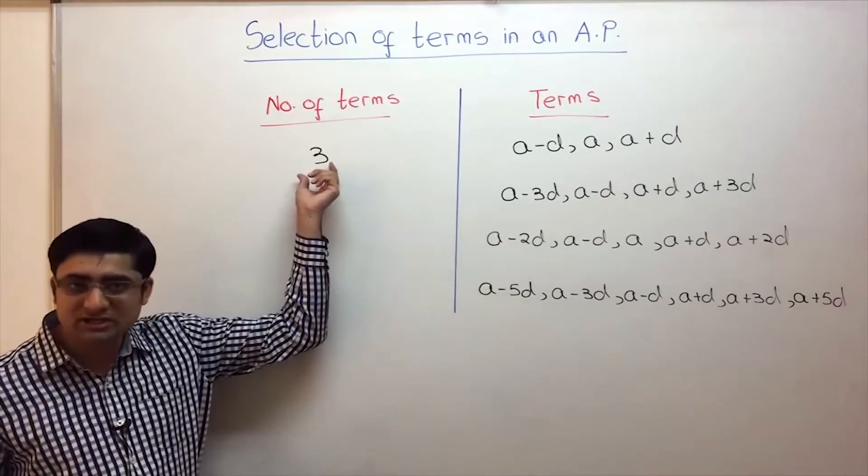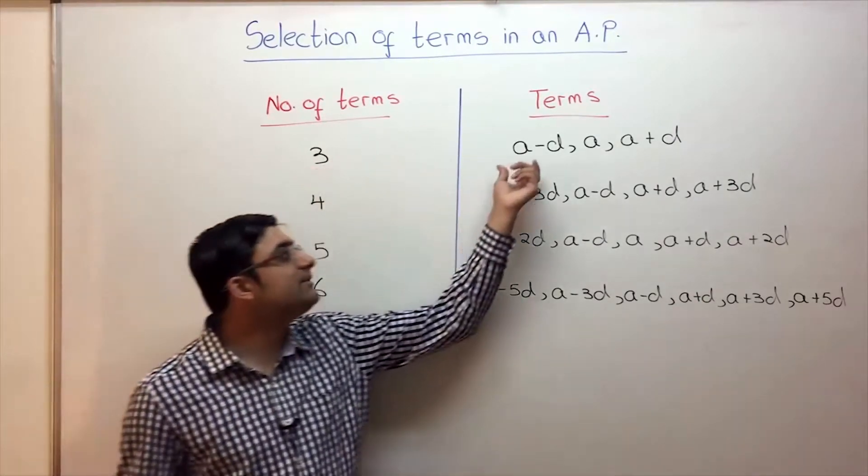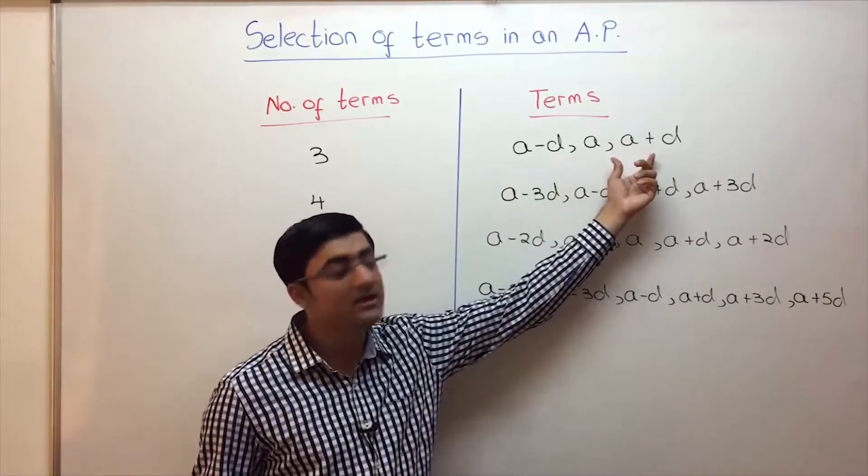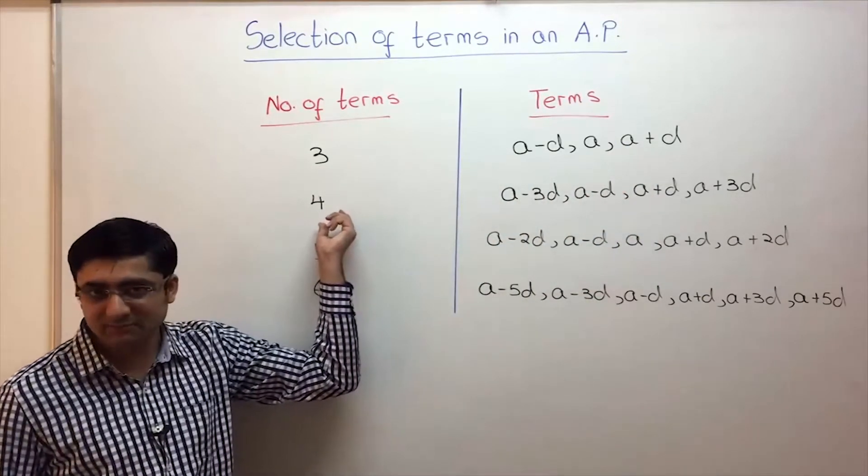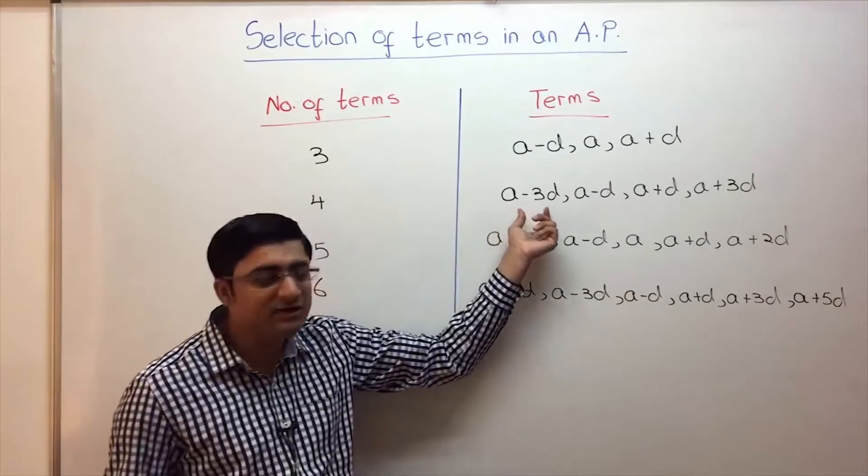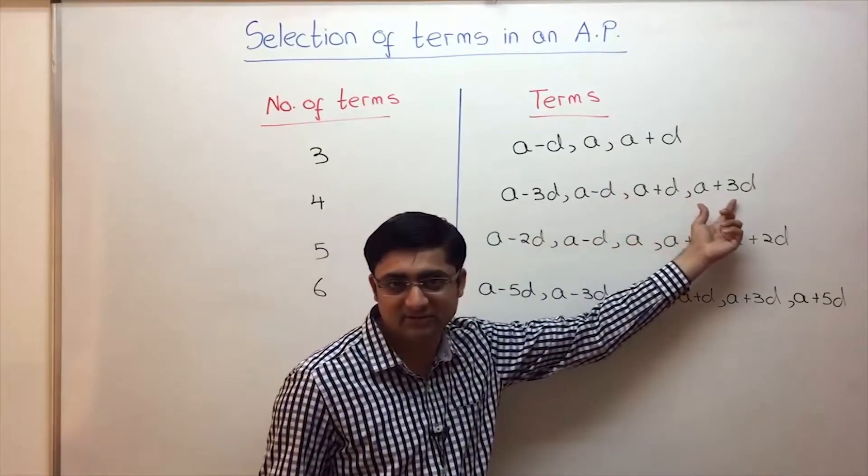Whenever you have to choose three terms which are in AP, choose them as A minus D, A, and A plus D. If you have to choose four terms in an AP, you will choose them as A minus 3D, A minus D, A plus D, and A plus 3D.